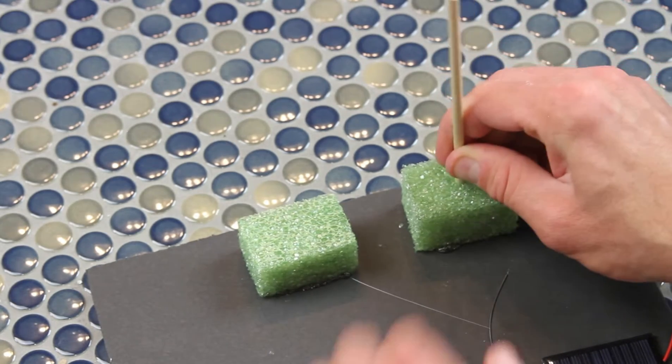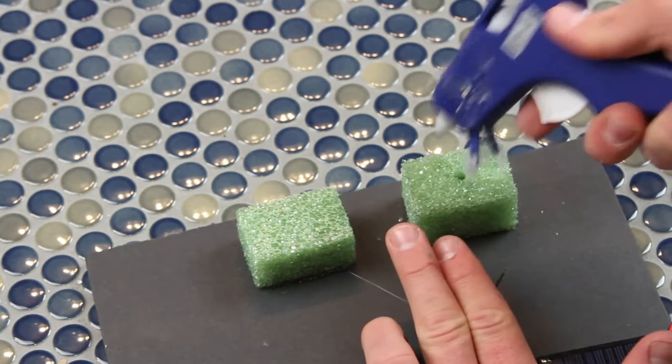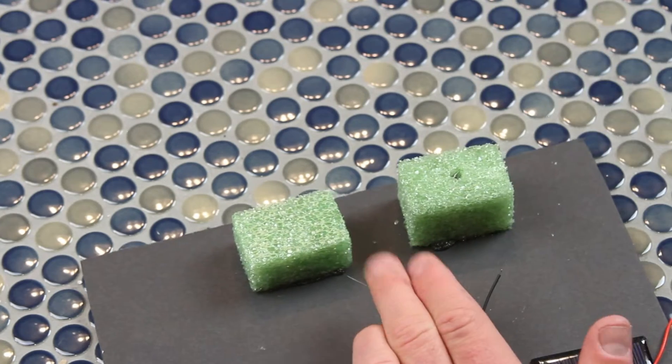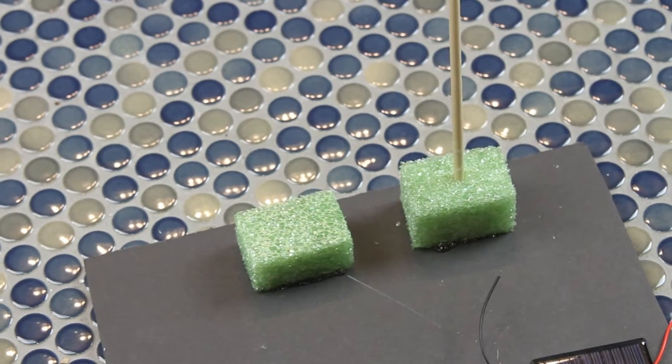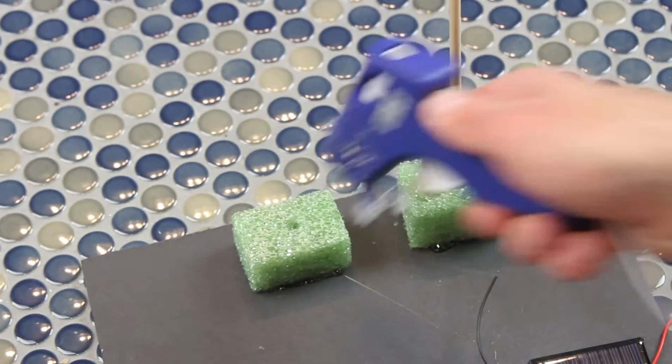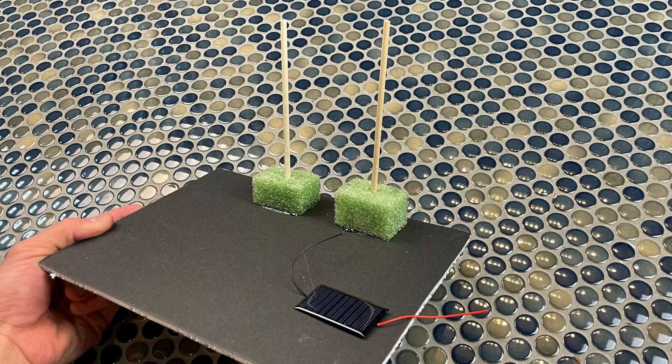Then go ahead and grab your dowels and poke a hole going straight up and down. Pull it back out, put a little bit of glue in there, and then stick your dowel back in. If it's not exactly straight up, you can always hold it straight until the glue dries. Do that twice, one for each of the foam cubes.